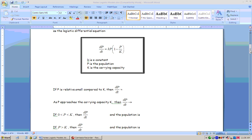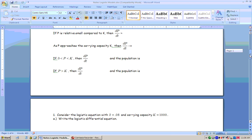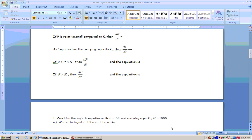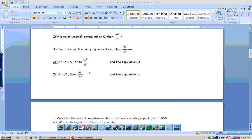And if your population is greater than the carrying capacity, then what can you tell me about dp/dt? It will be decreasing, or it will be negative, so less than zero, and therefore the population is decreasing.